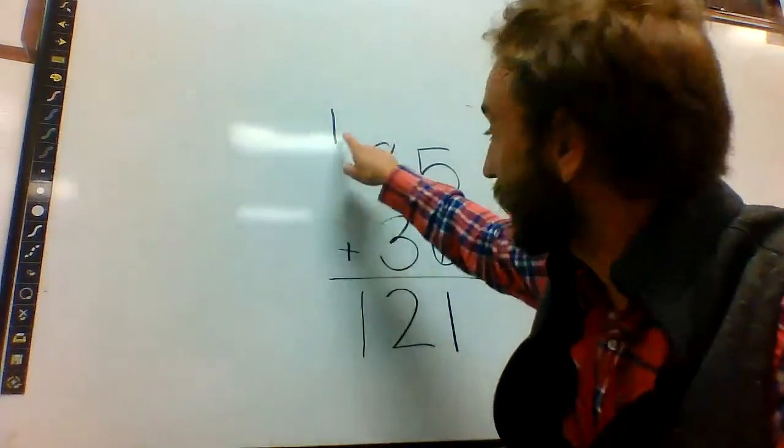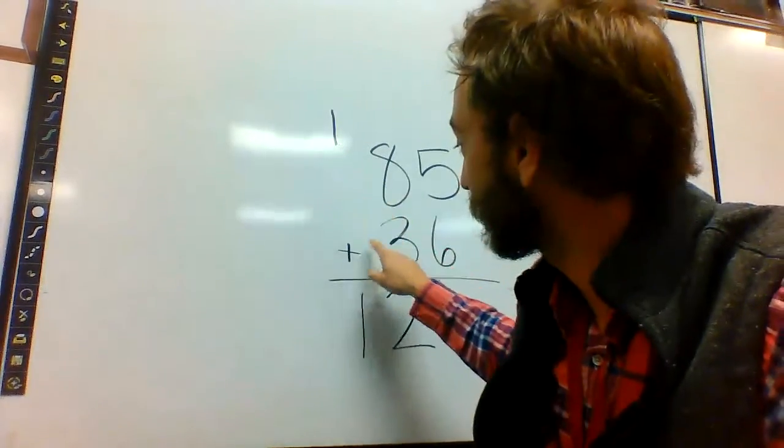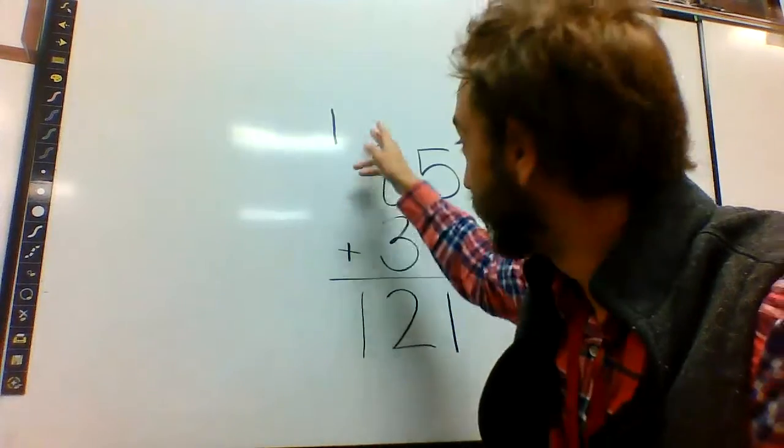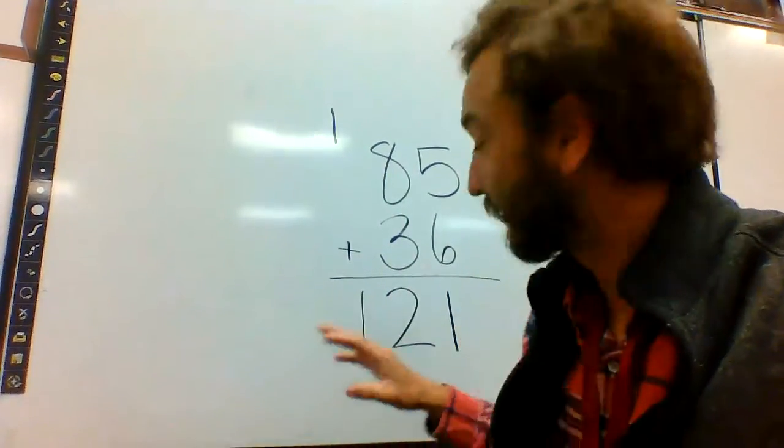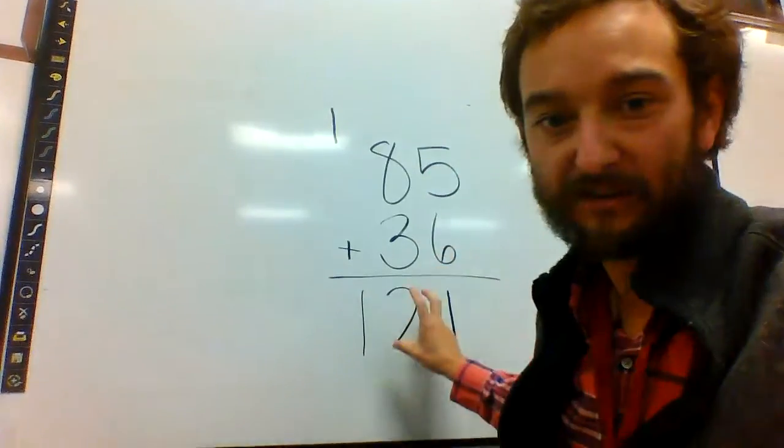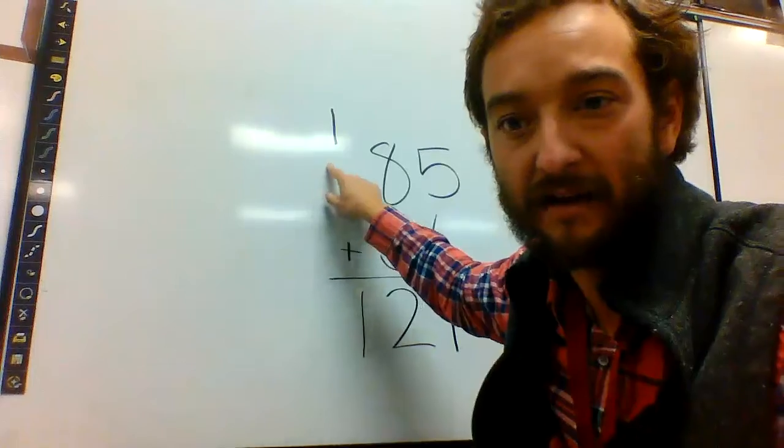Be sure you're carrying over here. That 10 has to go over here with the rest of these tens. And then you add down. Add all 3 of these together. I've seen some people do this 5 plus 6 and just drop the 11 straight down here. You've got to make sure you're carrying it up here and adding all your tens together.